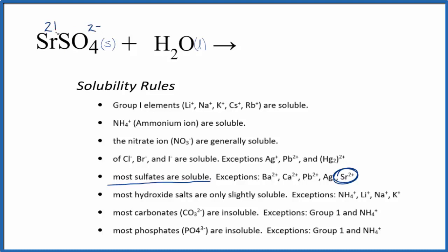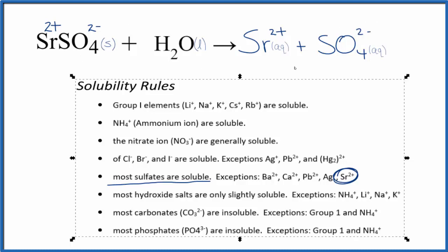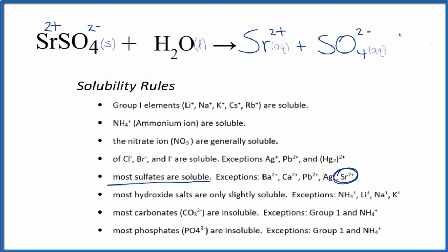For the small amount that dissolves, we'd write the strontium ion Sr²⁺ — it's in group 2 on the periodic table — plus the sulfate ion SO₄²⁻. We should put aqueous (aq) after these ions since they're dissolved in water. But again, only a little bit of the strontium sulfate dissolves; most of it will remain at the bottom of the test tube.